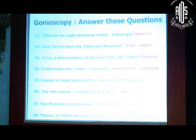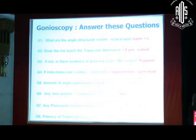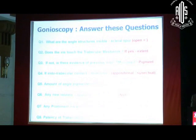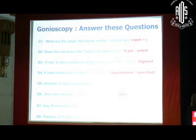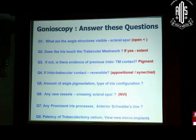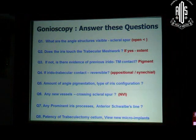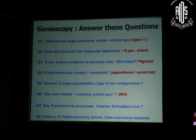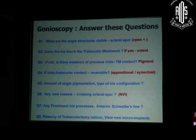Second question: is the iris touching the trabecular meshwork? That is the second important question. And if it is touching, what is the extent of contact between the iris and the trabecular meshwork? Third: if the angle appears narrow but the trabecular meshwork is visible, you have to identify whether there is any evidence that previously there was trabecular meshwork contact with the iris — meaning the patient is having intermittent attacks of angle closure. Once you identify iris-trabecular contact, you must answer whether this contact is reversible or not.